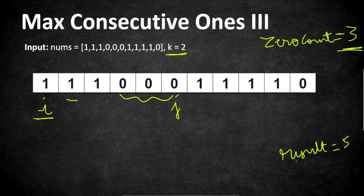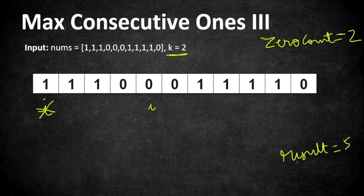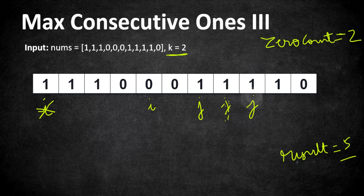We move pointer i until we get 2 or fewer zeros. Scanning through 1s then hitting a 0 would still give 3 zeros, so we iterate i to the next zero and position it so we have only 2 zeros in the window. Zero_count updates back to 2. Moving j forward, the sequence grows: size 3, then 4, then 5 — already matched — then 6. This new length of 6 is the longest consecutive sequence from i to j, all ones within 2 flips, so we update result to 6.